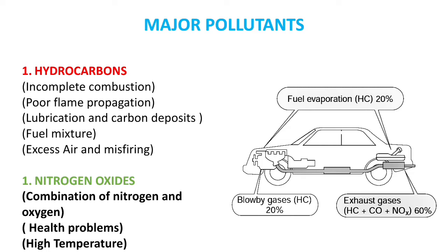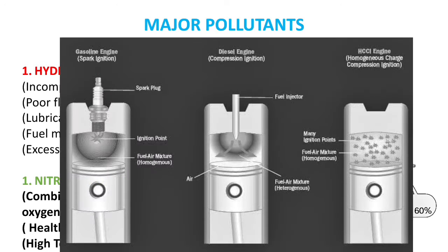A part of the air-fuel mixture is left unburnt because the flame front stops before igniting all of the mixture, resulting in misfiring. When fuel is not properly mixed with air, excess air in the air-fuel mixture also results in misfiring and high HC emissions.